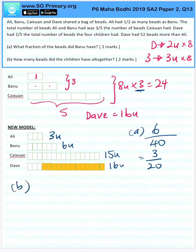Part B. How many beads did the children have altogether? We know that Dave had 52 beads more than Ali. So Dave has 16 units, Ali has three units. So 13 units is 52.